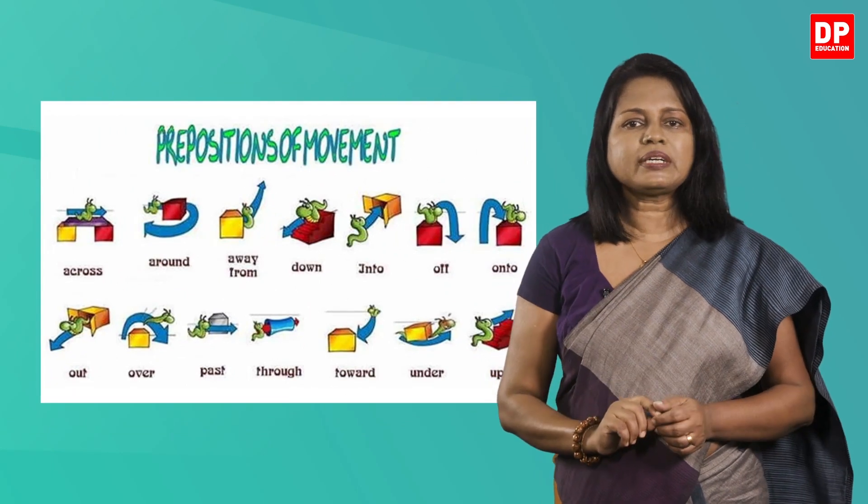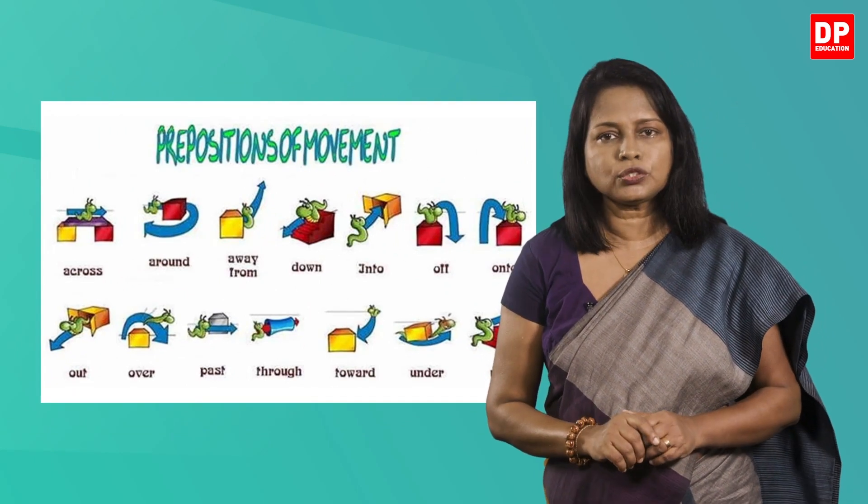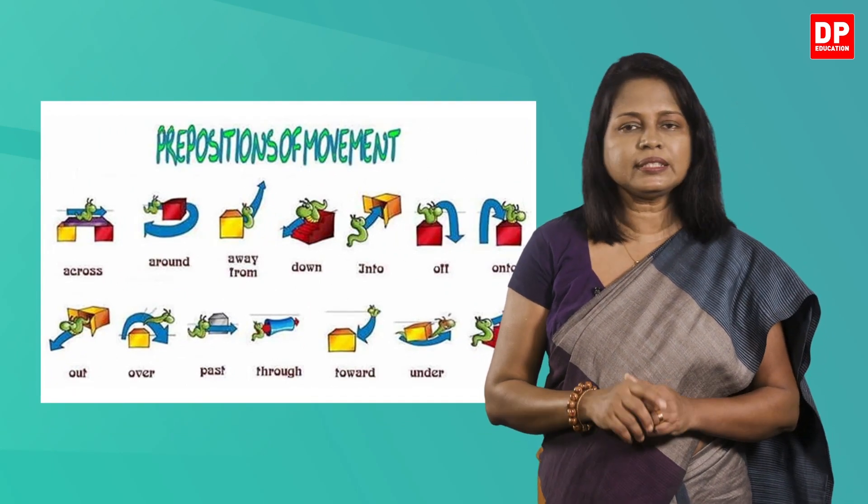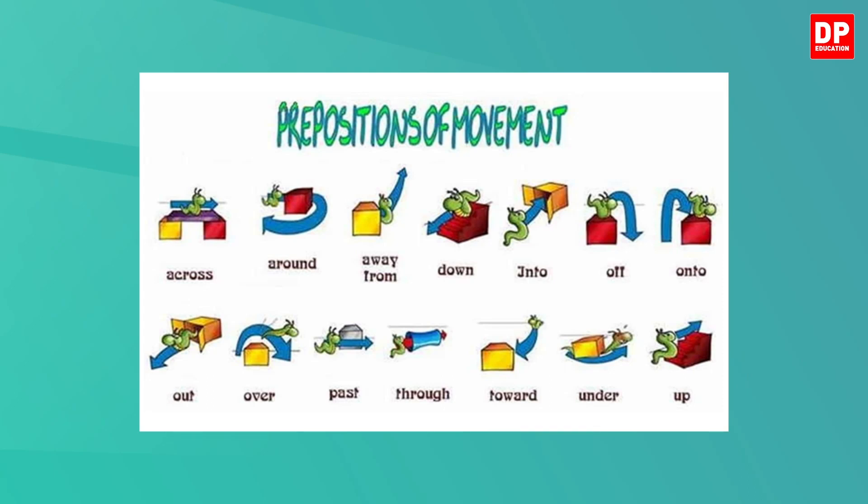This image will graphically show you the prepositions of direction clearly. I hope you are clear about the six prepositions we learned today. Let's do some practice activities on prepositions. As you have learned prepositions of time, place, and direction, let's do these activities to revise all of them.